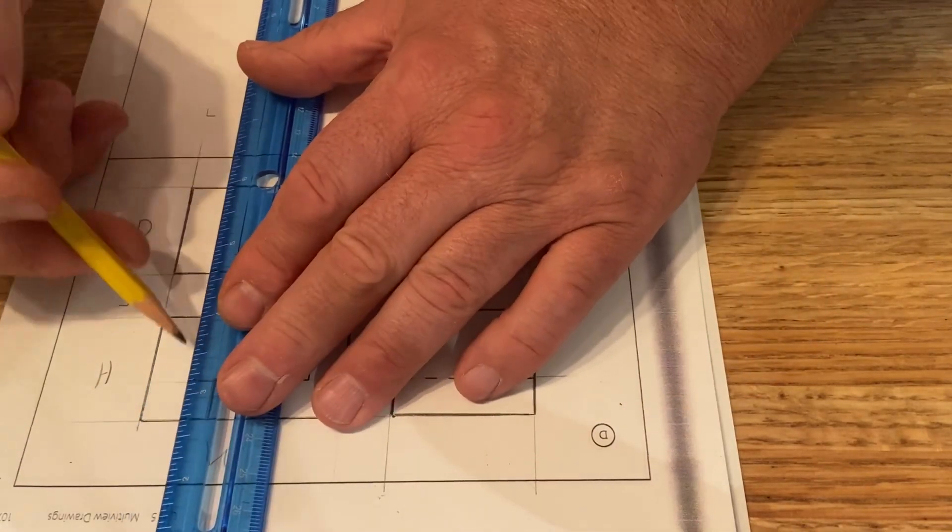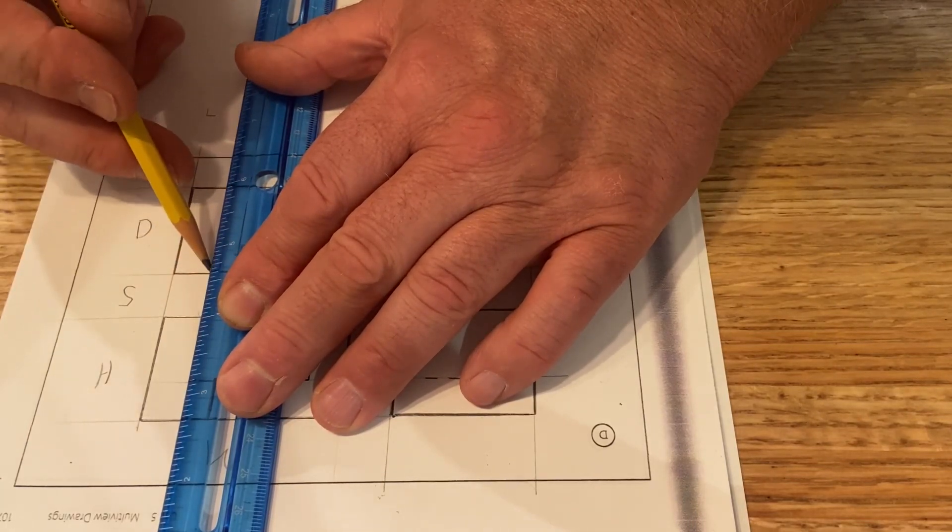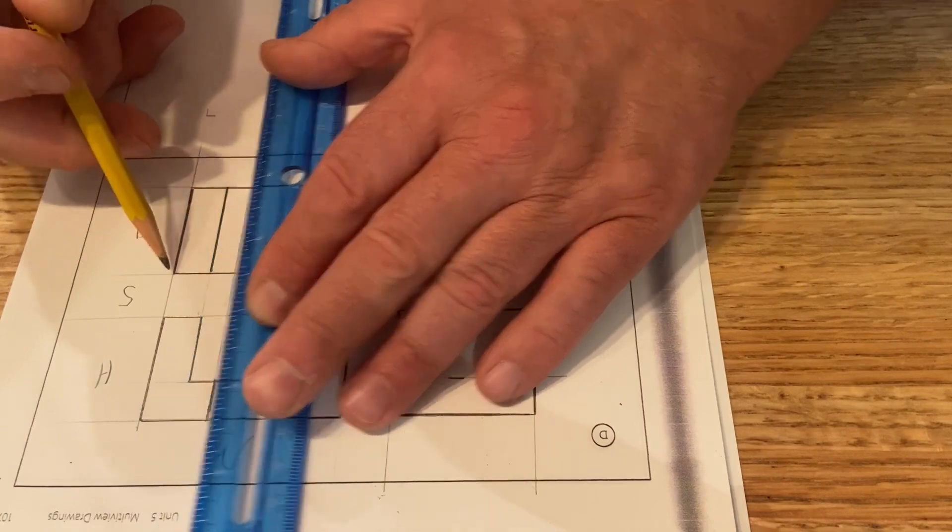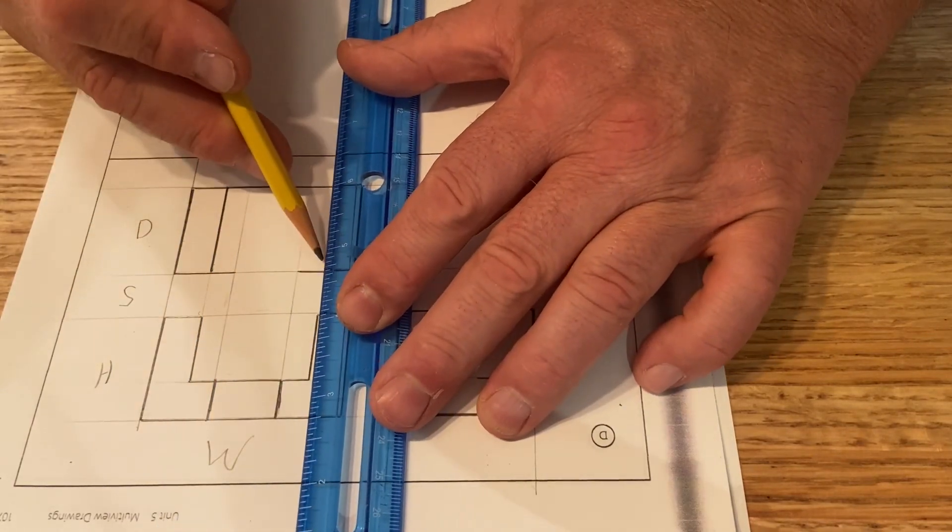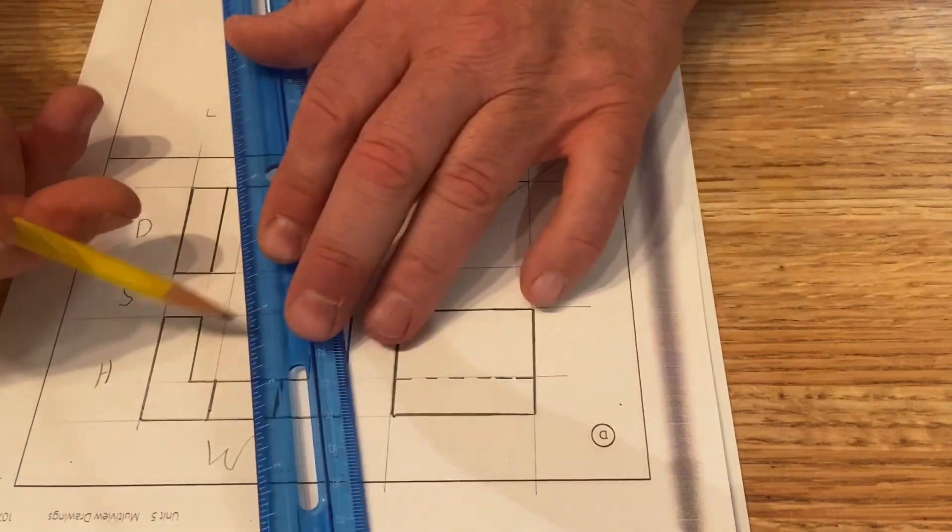And where these come in, these are going to be solid object lines. We can project right on up to there. So that's going to be a solid object line. Over here is going to be a solid object line. We've already projected that over, but we don't really know exactly how far in that goes.